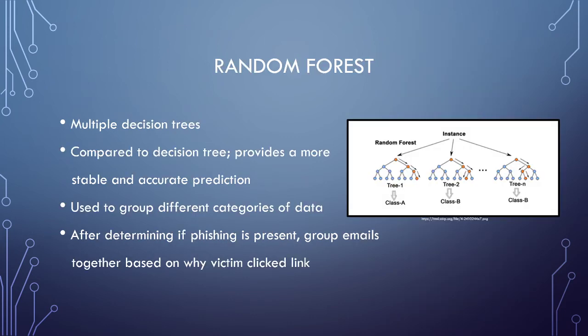Next is the random forest algorithm. This builds off of the decision tree. As you can see from the picture, random forest is just multiple decision trees. Compared to the decision tree, random forest will often provide a more stable and accurate prediction. The reason for this is that it is simply just a group of multiple decision trees.